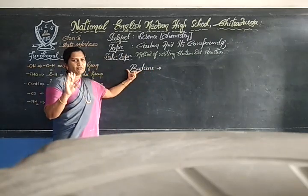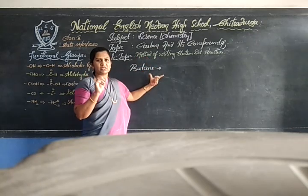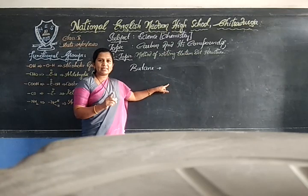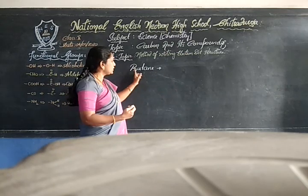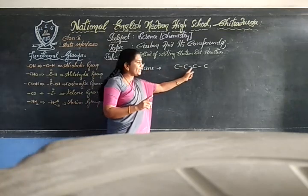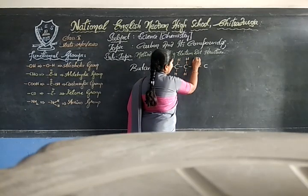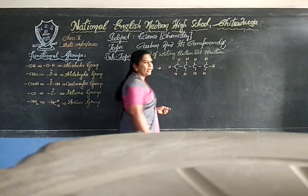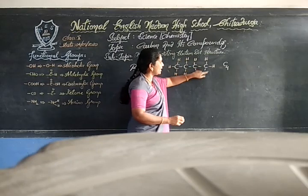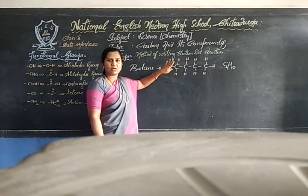Butane means a four-carbon compound. The suffix '-ane' refers to a saturated hydrocarbon. When asked to write the electron dot structure for butane, you cannot directly go for it — first you have to write the basic skeletal structure, and based on that you can write the electron dot structure. Butane is a four-carbon compound with all single bonds between carbons. The molecular formula of butane is C4H10.